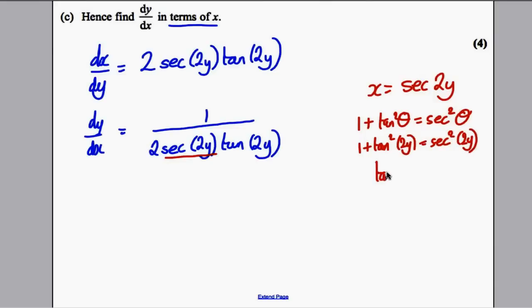So therefore, tan squared of 2y is sec squared 2y subtract 1. And tan of 2y, taking square roots, is therefore the square root of sec squared minus 1.